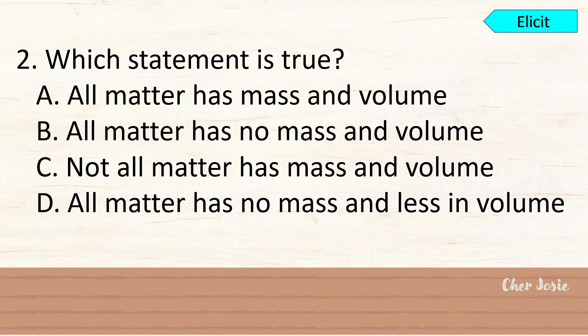Number 2. Which statement is true? A. All matter has mass and volume. Letter B. All matter has no mass and volume. Letter C. Not all matter has mass and volume. Or letter D. All matter has no mass and less in volume. The correct answer is letter A. All matter has mass and volume.